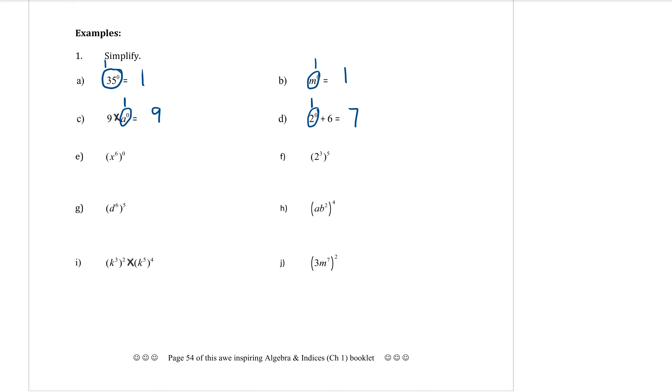In E, I have x to the power of six in brackets. And that's to the power of zero. It doesn't matter what this thing is here. If it's to the power of zero, it's just going to be equal to one. So that is still just a one.